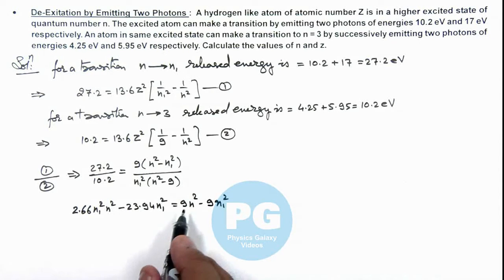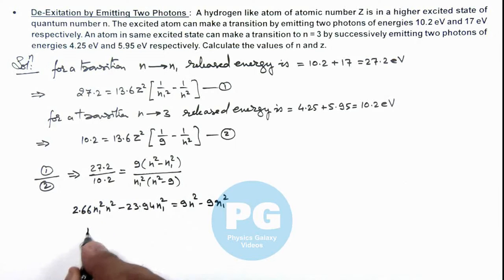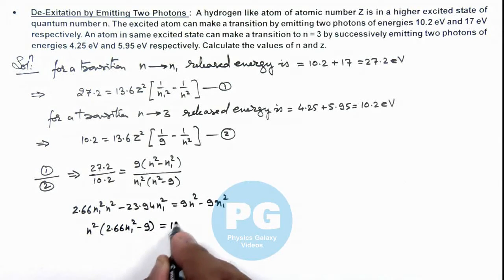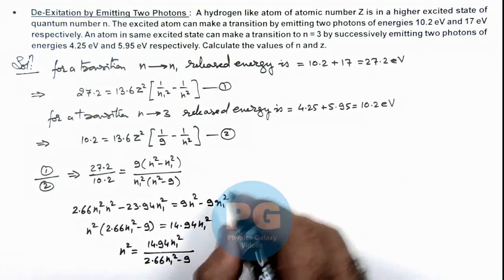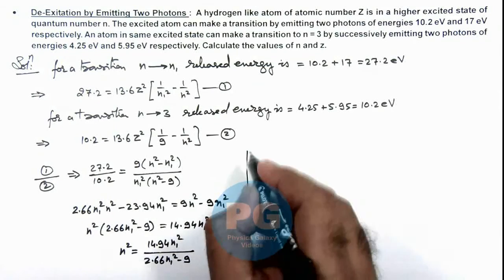So here if I take the value of n common and we can take it on the other side, this gives n square multiplied by 2.66 n1 square minus 9 is equal to 14.94 n1 square. Or the value of n square we are getting is 14.94 n1 square divided by 2.66 n1 square minus 9. So here for different values of n1 we will get the value of n. And if we just have a look here carefully we can see